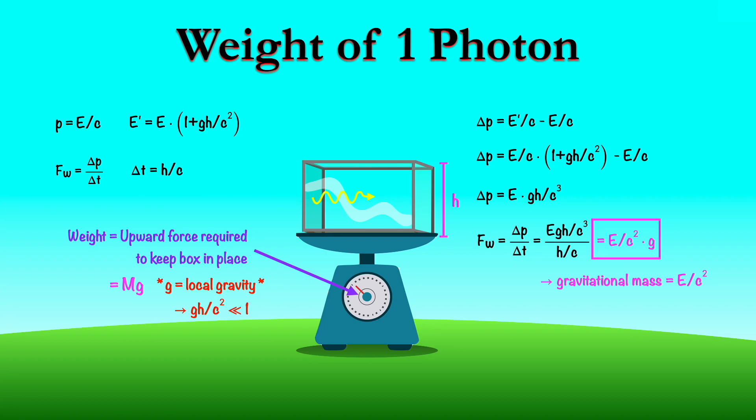In Einstein's theory of gravity, light is affected by gravitational fields, and the photon will not travel straight across. Instead its trajectory will bend downwards. So now it gets a little bit complicated. Not only will the photon be a little bit blue shifted, meaning it will gain some energy because it will hit the other side of the box at a lower height, but it's going to hit it at a funny angle. And so you have to keep track of the momentum in the horizontal direction and the momentum in the vertical direction.